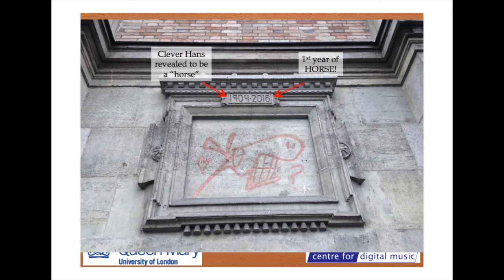So that is horse — an explanation of the dates: Clever Hans was revealed to be a horse in 1904, and the first year of horse was 2016. I found a piece of graffiti in Paris. Quite appropriate. Thank you very much.